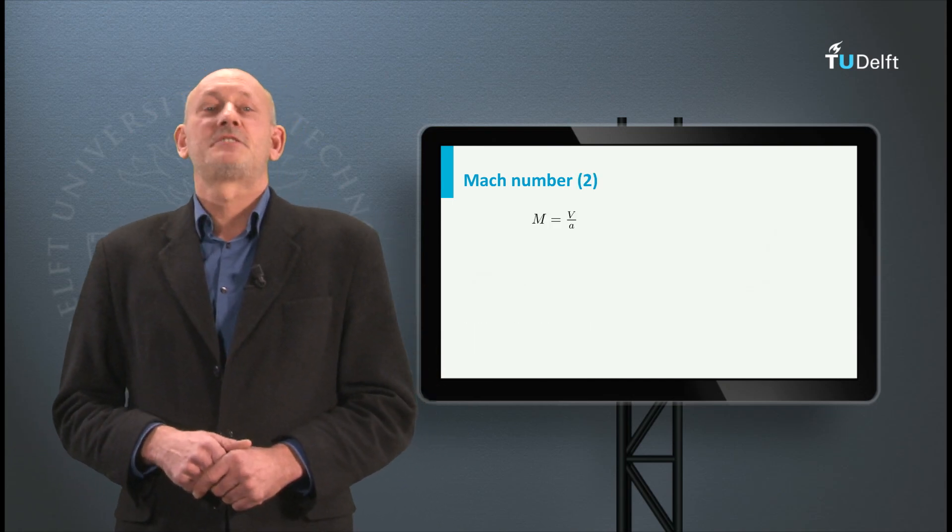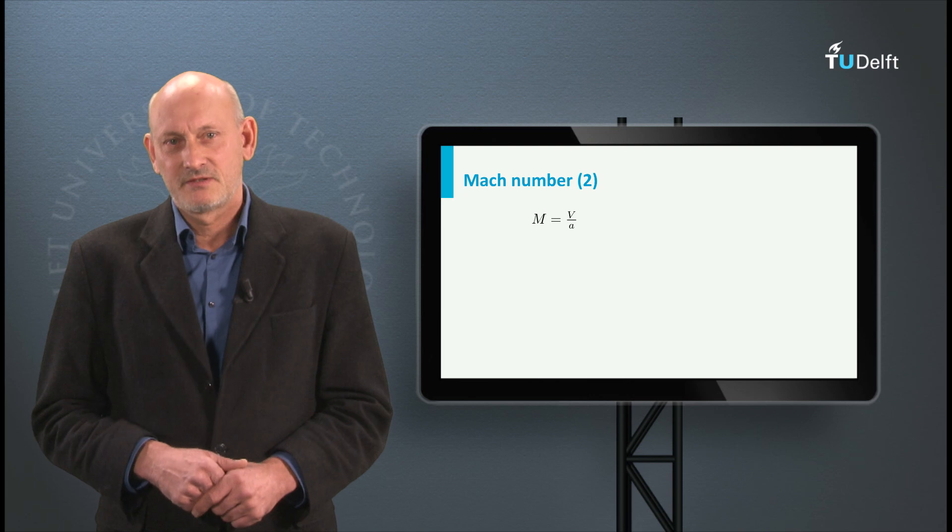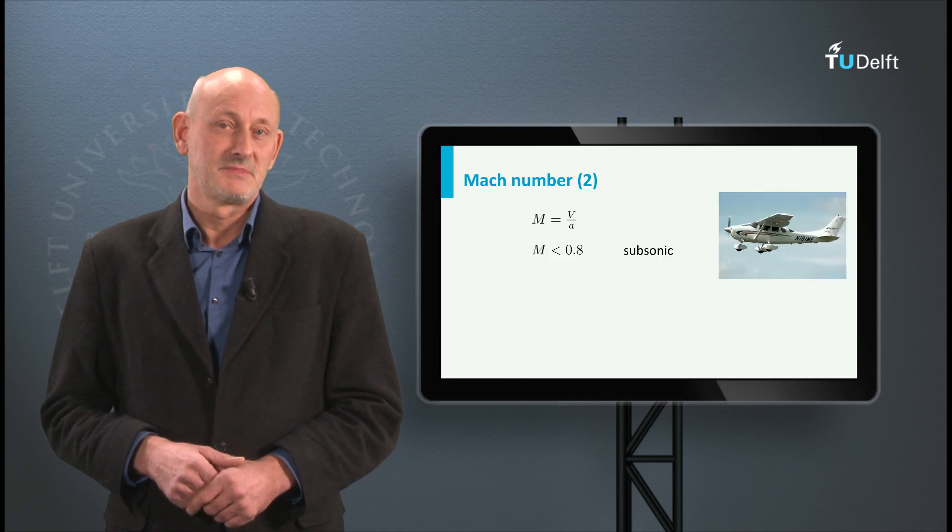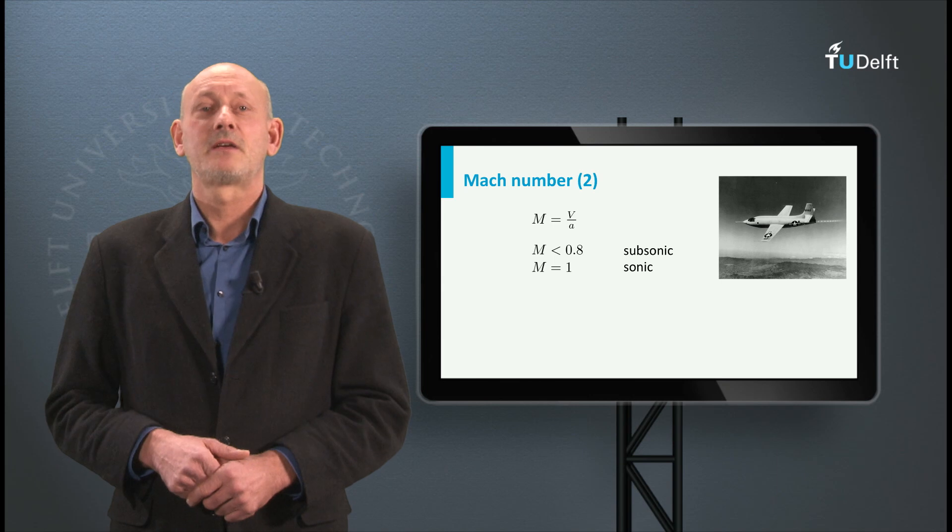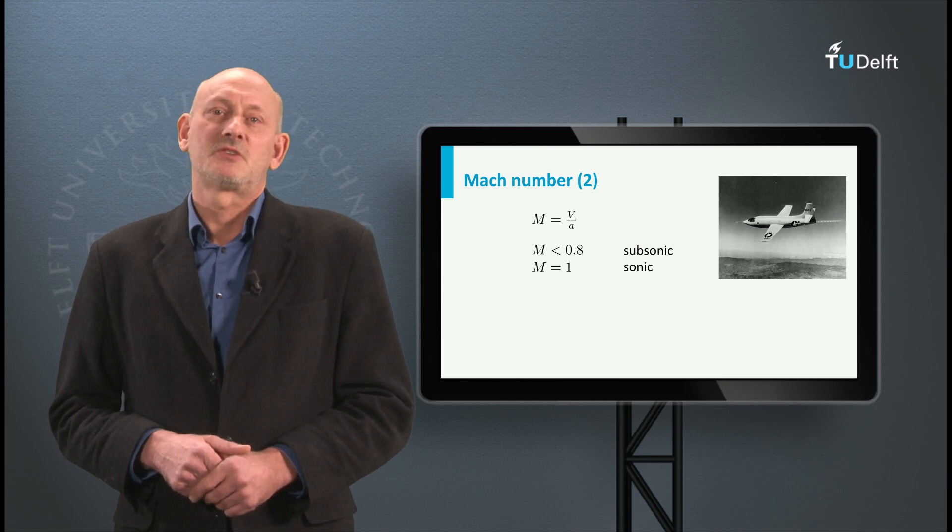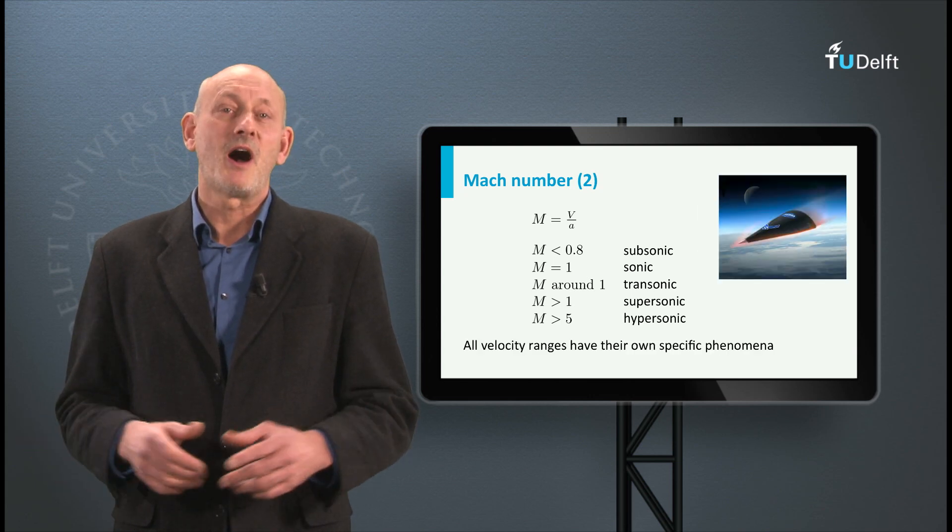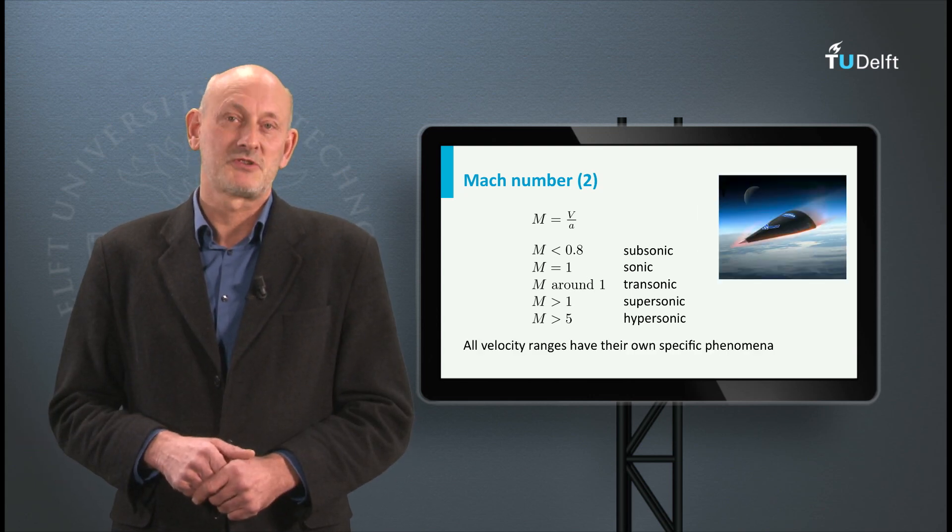Flight can be roughly classified into five categories. M smaller than 0.8 is called subsonic. M is 1 is called sonic, M around 1 is called transonic, M higher than 1 is called supersonic and finally M higher than 5 is called hypersonic.